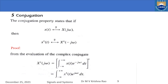The fifth property is conjugation. Conjugation applies only to complex numbers, and in general x(t) is complex. Unless stated to be real, x(t) is by default complex, and capital X of omega is also complex.